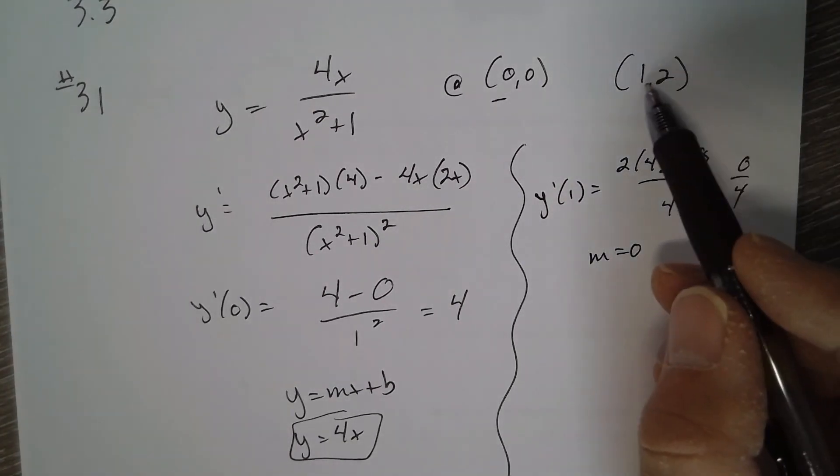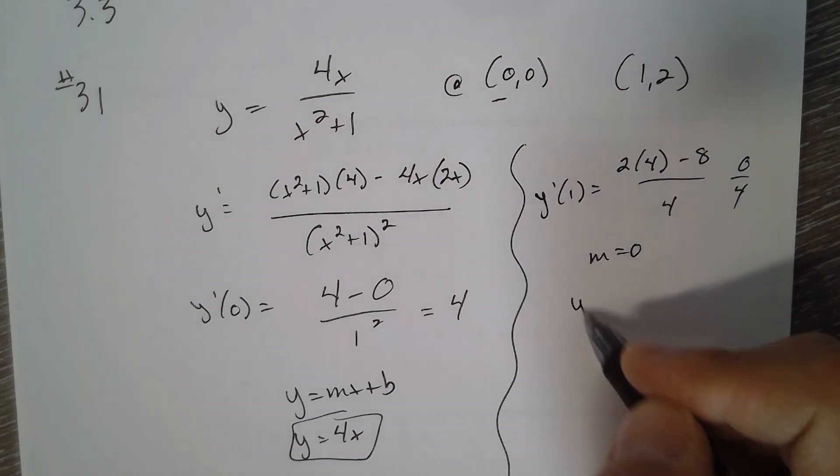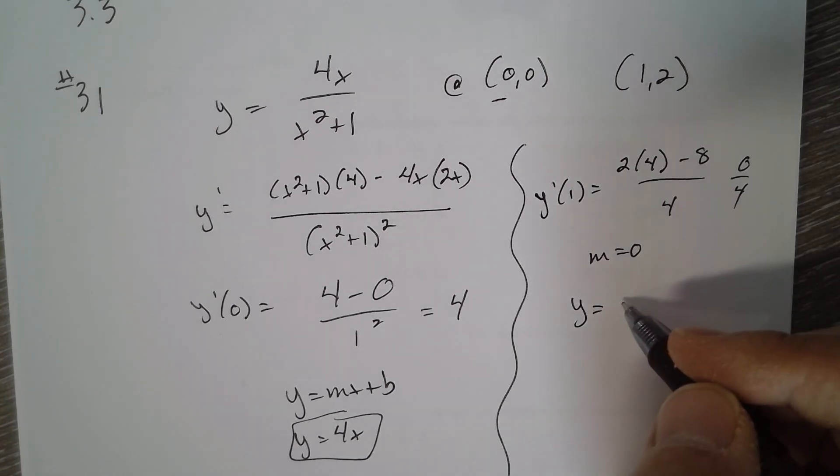And it goes through one comma two, so it would be y equals two would be the tangent line.